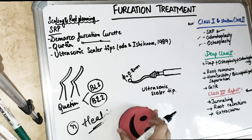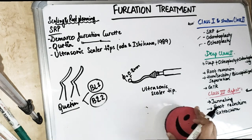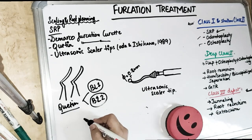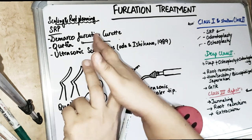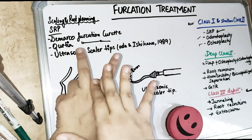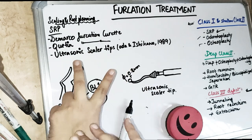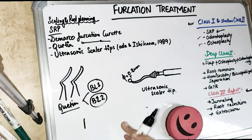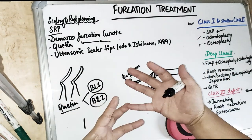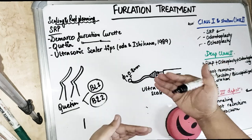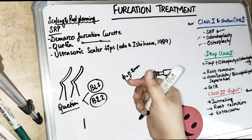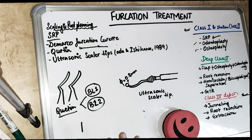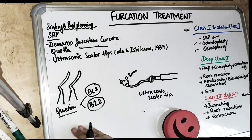The difficult thing about the furcation is that while you are doing scaling and root planing, with all the concavities and surfaces of the teeth, it is actually very difficult. So we have some special curettes used only for the furcation defect, because normal curettes cannot go into the furcation.